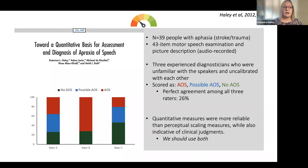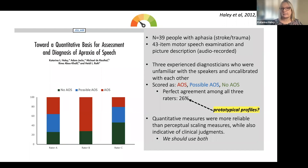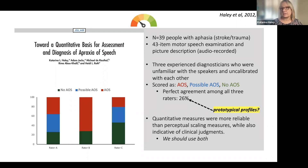Had they been working together, their expectations would have been more similar and they would have had greater agreement. The 26% agreement perhaps reflects more prototypical examples of the AOS syndrome. I would draw your attention to aphasia syndromes — we have for a long time accepted that aphasia syndromes are behavioral syndromes that are very heterogeneous, and our traditional categories don't always overlap across clinicians or across different aphasia batteries. There are different expectations for what is considered a good profile.